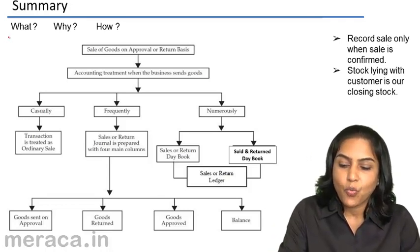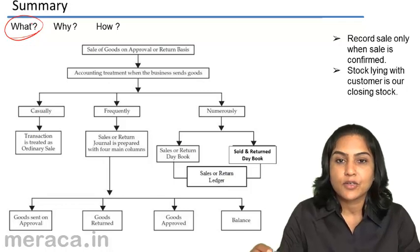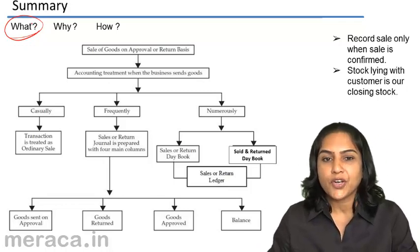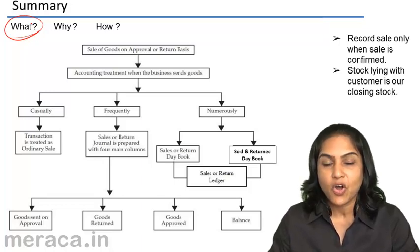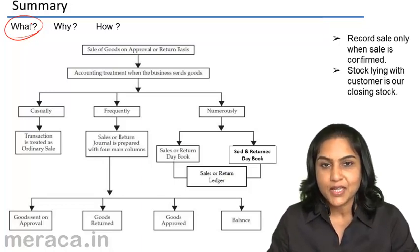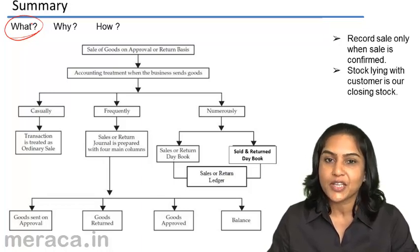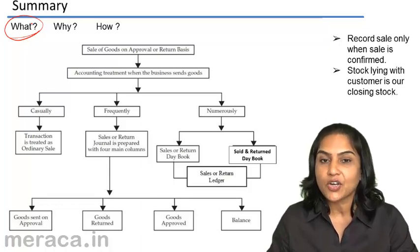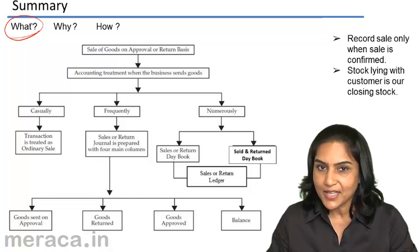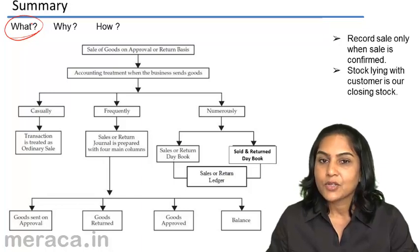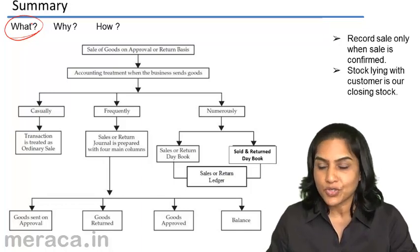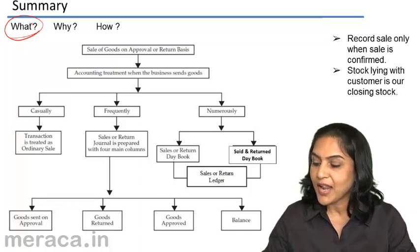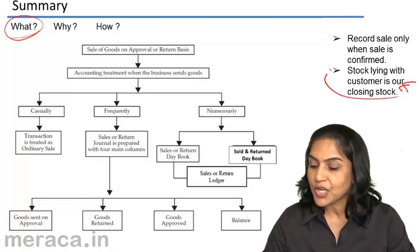We first understood what goods sent on approval means. Very simply speaking, when we sell goods to a customer on an approval basis, the customer has a right to reject the goods, reject the sale, and return the goods. So when goods are sent on approval, it is not actually a sale. Those goods still belong to us — we have not transferred ownership. The stock lying with the customer is our closing stock.